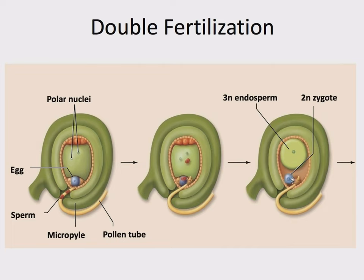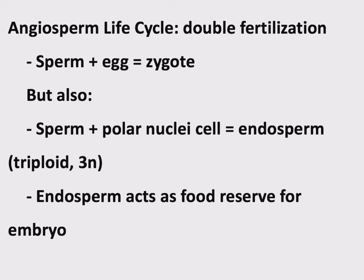The polar nuclei — a single cell with two haploid nuclei — when fertilized by the second sperm, all three combine to form a triploid cell (3n, three copies of each chromosome). This is called the endosperm. It will grow and divide but is not part of the plant itself — no leaves or roots. The purpose of this triploid endosperm is purely to serve as fuel for the growing sporophyte. To summarize: sperm plus egg equals zygote; sperm plus polar nuclei equals endosperm, a triploid 3n structure serving as a food reserve for the embryo.